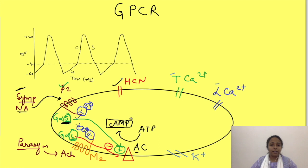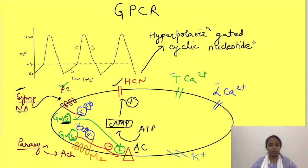These HCN channels which are responsible for prepotential, their opening and closing is affected by the concentration of cAMP inside the cells. The name of this HCN channel is hyperpolarization gated cyclic nucleotides. So the cAMP is a cyclic nucleotide. When cAMP increases, the probability of opening of these channels increases.